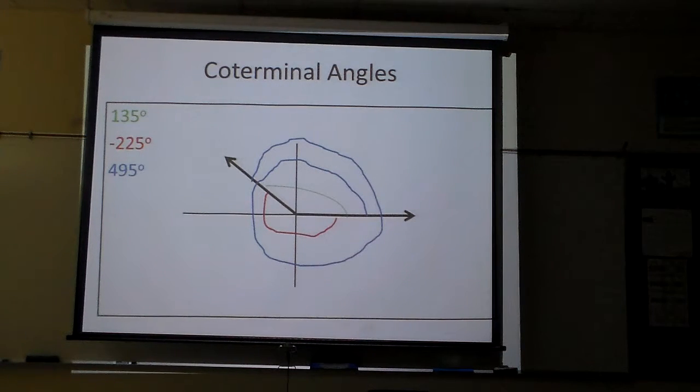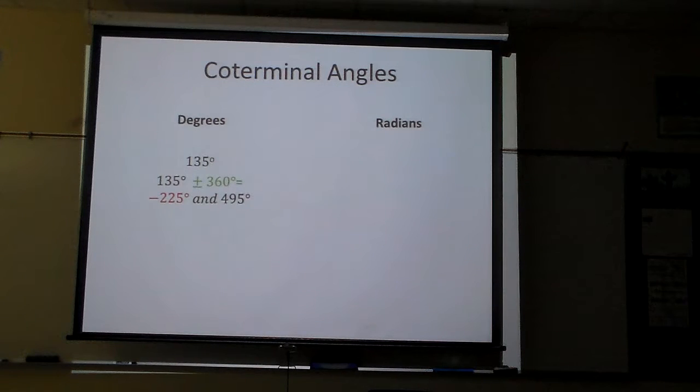So now then, let's do the same problem as a radian. Now I'm going to tell you what, 135 degrees is 3π over 4. And the first question we need to ask ourselves, how many radians in a circle? And the answer is 2π.